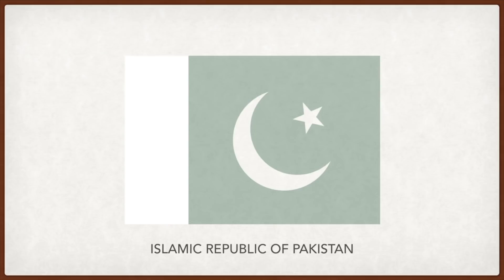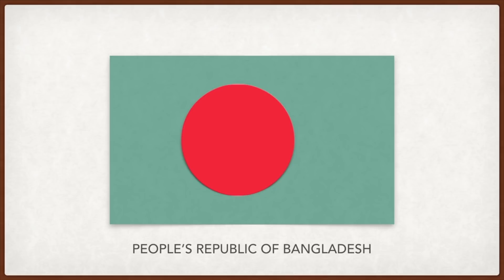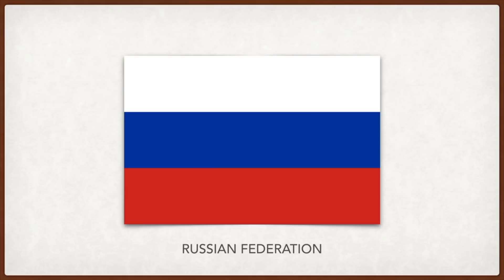Nigeria: the green represents natural resources, the white represents peace. Bangladesh: the circle represents the sun and the red color the blood of those who fought for independence; the green is for the lush lands of Bangladesh.